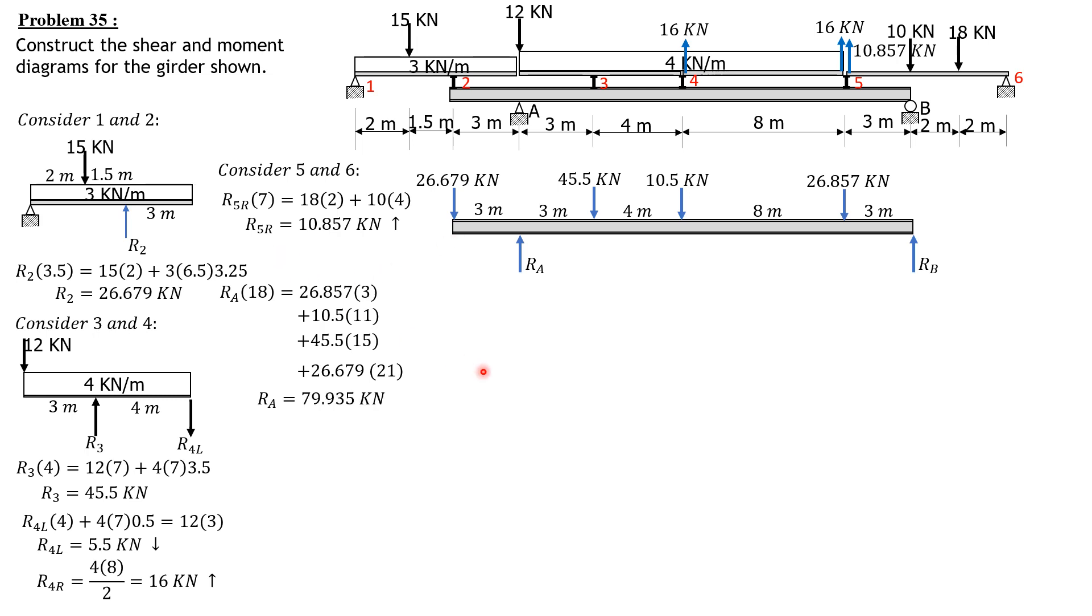Likewise, summation of moments about A equals zero, counterclockwise positive. RB times 18 plus 26.679 times 3 equals 45.5 times 3 plus 10.5 times 7 plus 26.857 times 15. So RB is 29.601. You have to check: RA plus RB should equal the total downward load, and it checks.